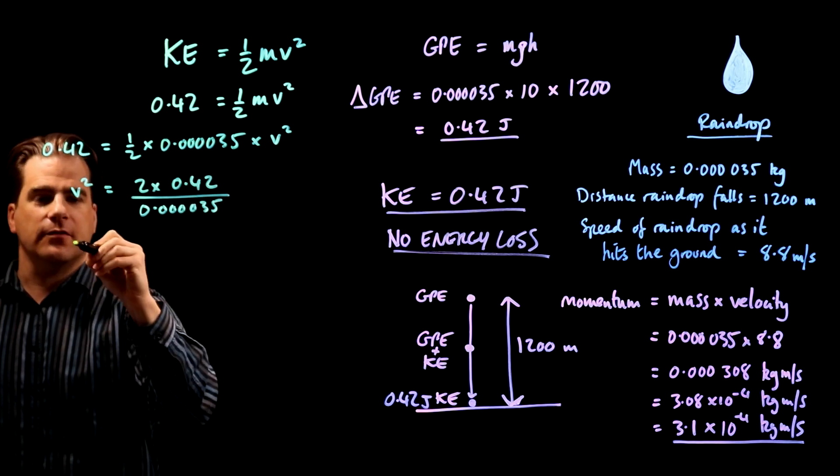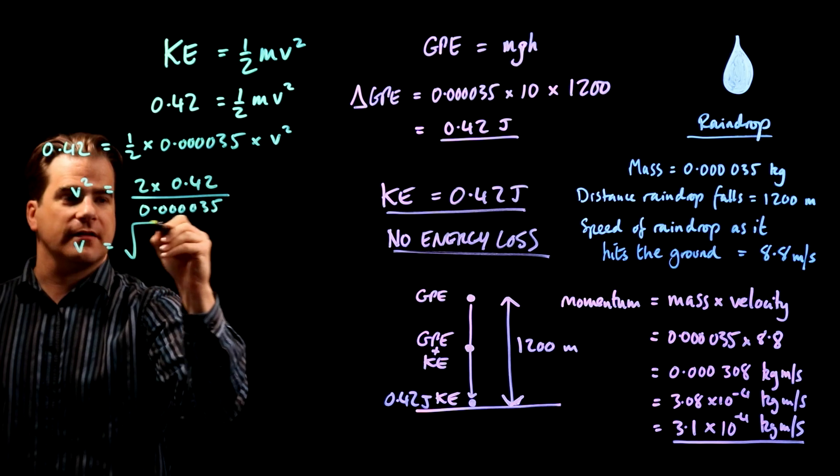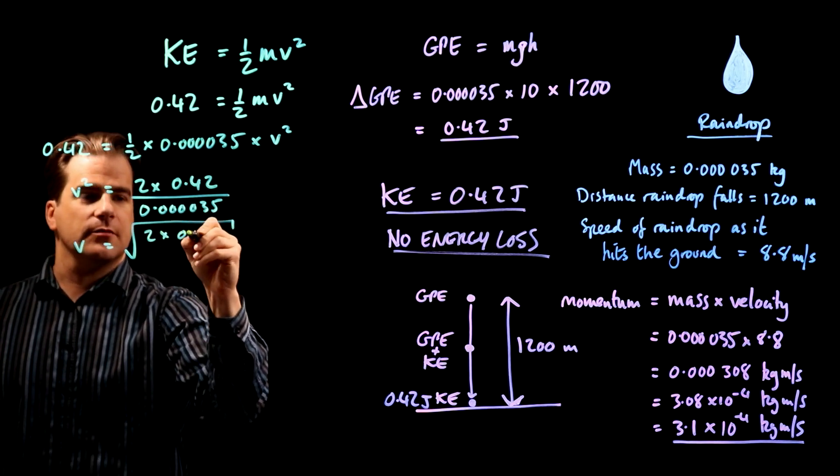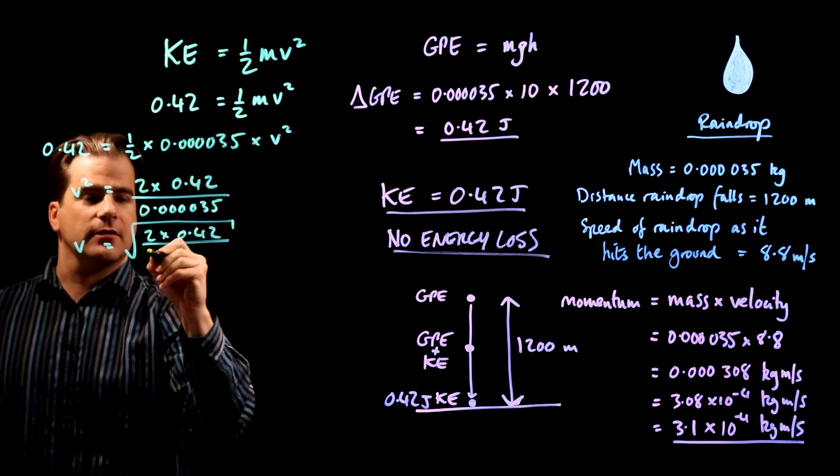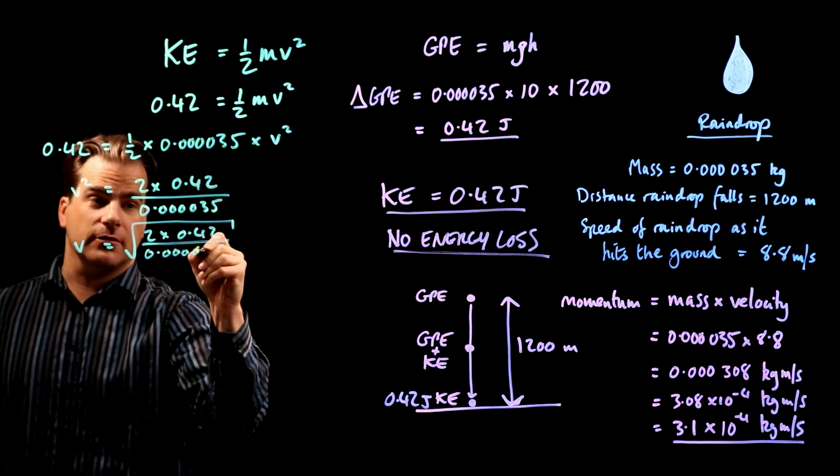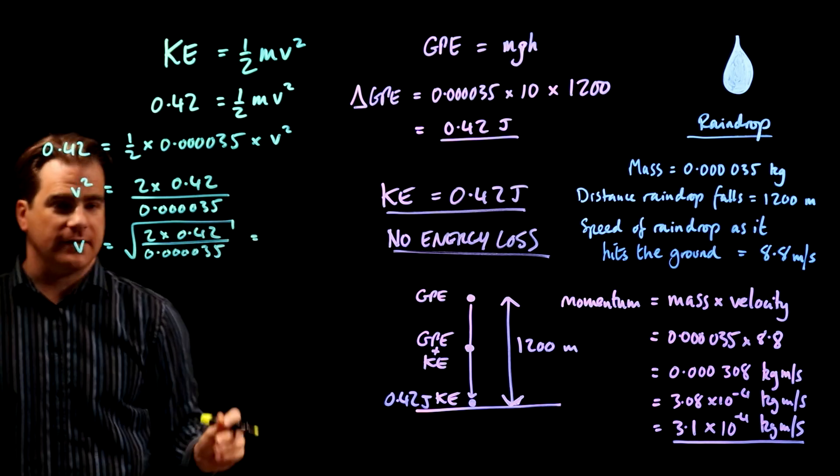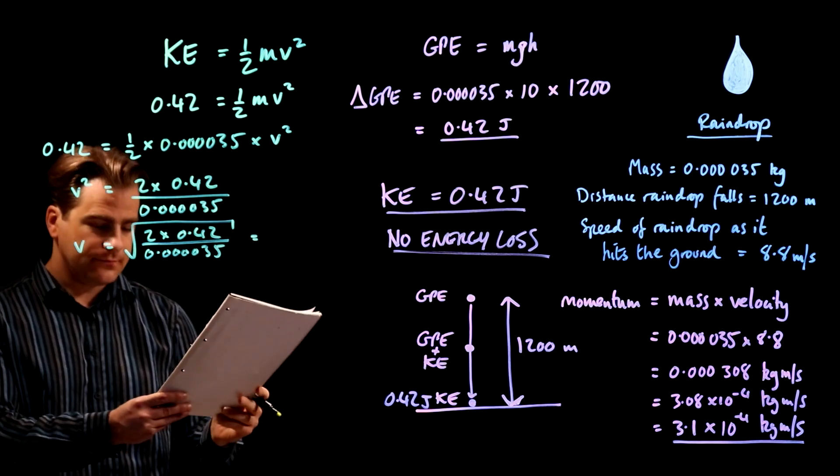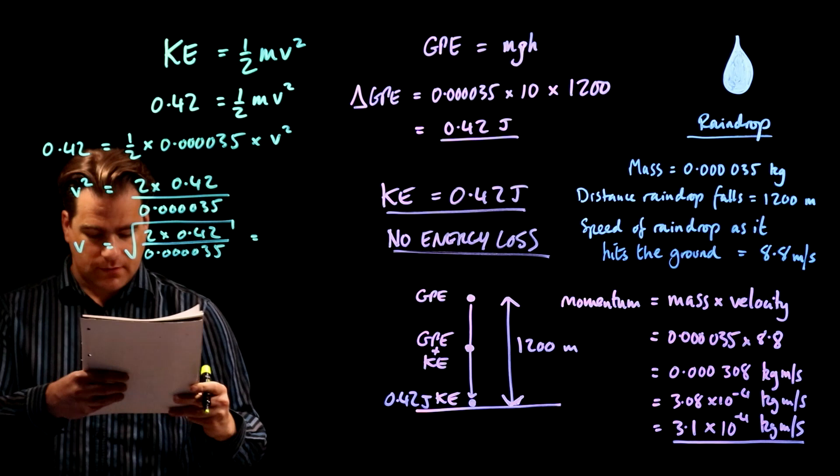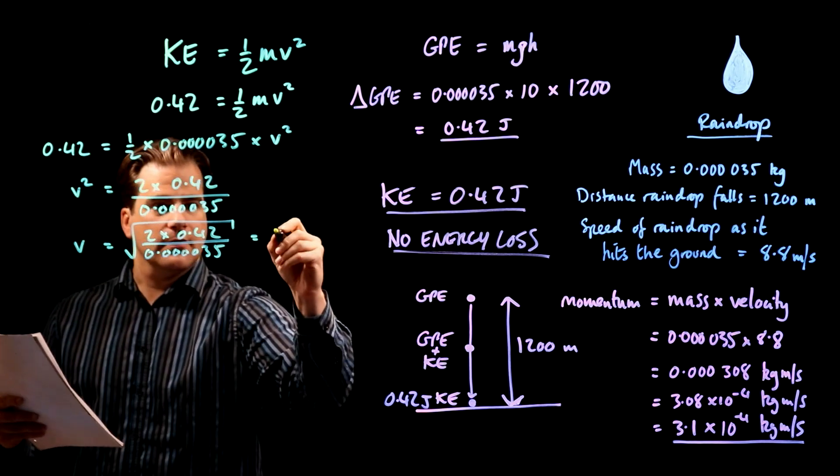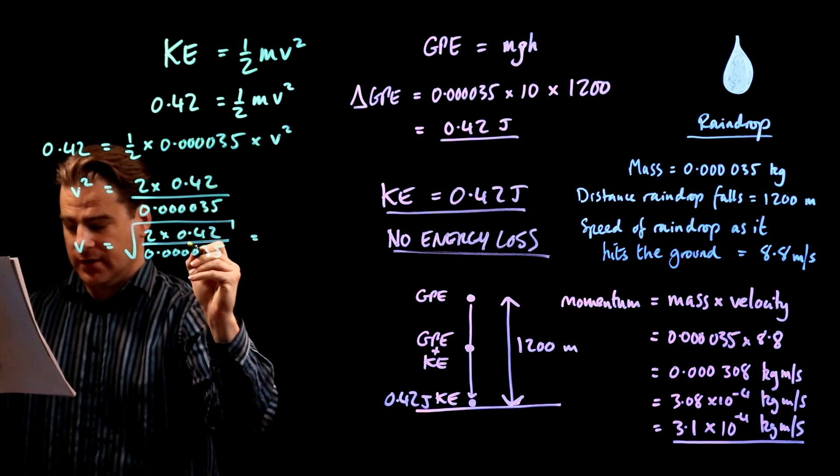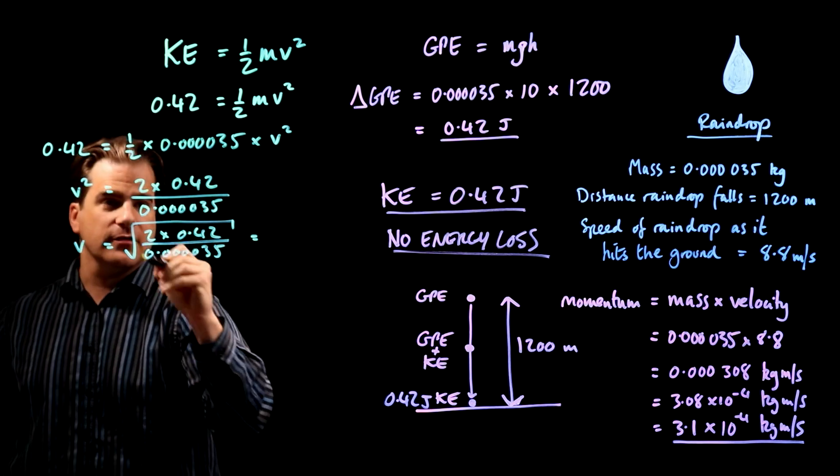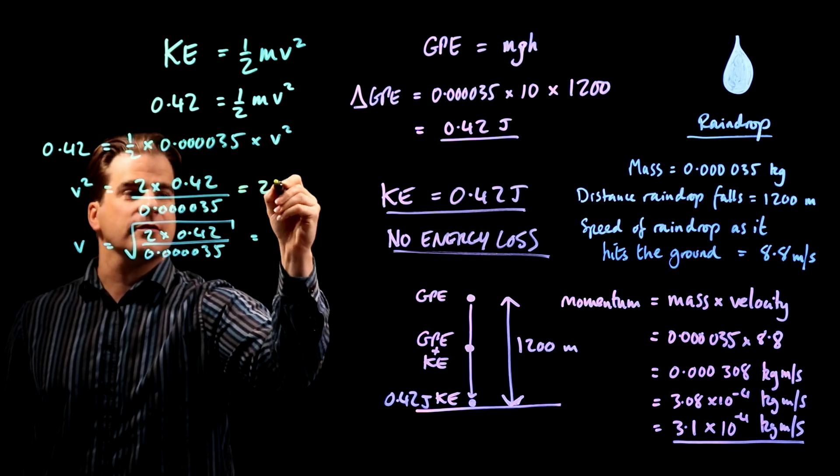and you get v squared is, bring 2 up there, 2 times 0.42 divided by 0.00035, okay? So, therefore, the velocity is the square root of that, 2 times 0.42 over 0.00035. So, that would be... Stick that in your calculator, and you get... Well, that, that whole thing turns out to be 24,000,